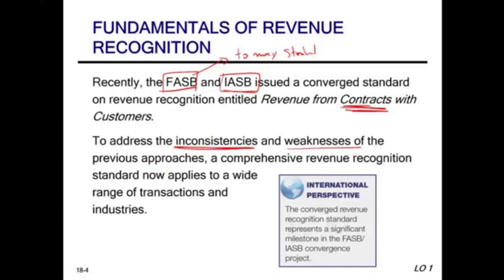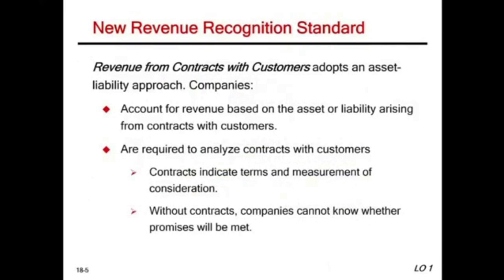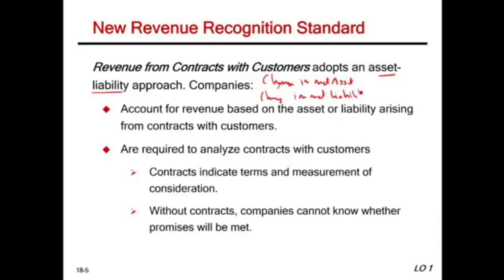Revenue from Contracts with Customers adopts an asset-liability approach. When determining revenue, they look at the change in net assets and the change in net liabilities for each party. Revenue is accounted for based on the asset or liability arising from the contract with customers. We are required to analyze the contract with customers, and in this session we focus specifically on the contract — breaking revenue recognition into steps, with this recording focused on the contract step.